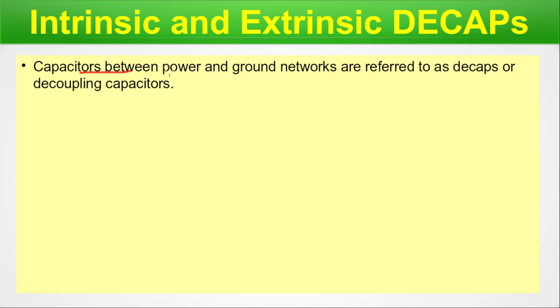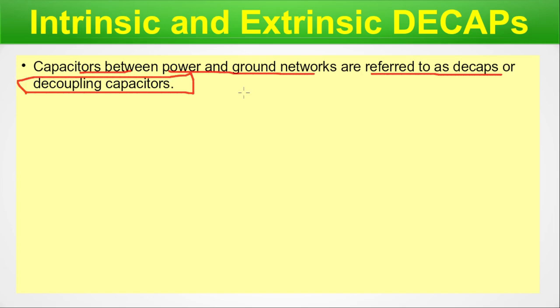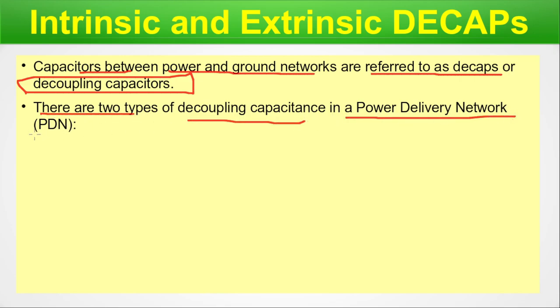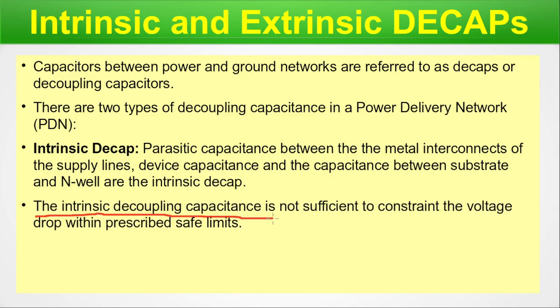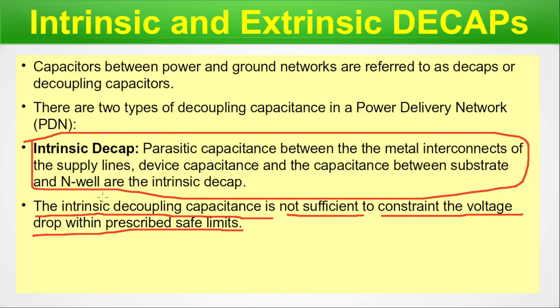Here we will talk about intrinsic and extrinsic DCAPs. These are not the same as internal and external DCAPs. Capacitors between the power and ground networks are referred to as DCAPs or decoupling capacitors. There are two types found in a power delivery network. Intrinsic DCAP refers to parasitic capacitance between metal interconnects of supply lines, device capacitance, and capacitance between the substrate and the n-well — these exist while the chip is being manufactured without adding extra DCAPs.